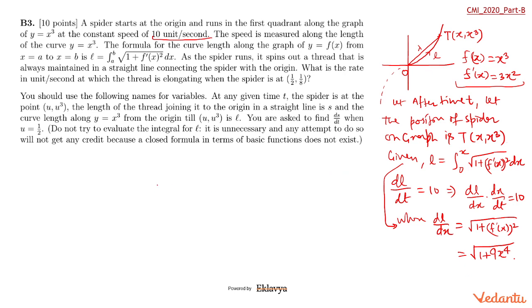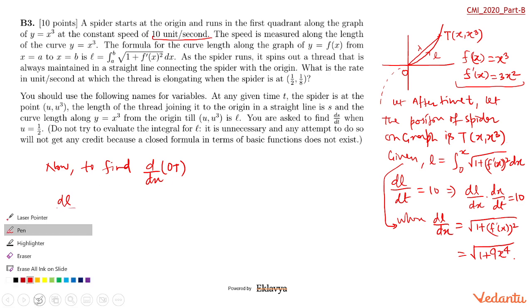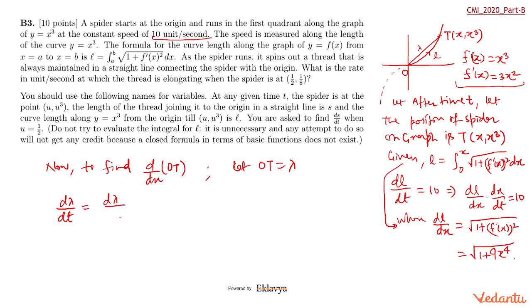The required is lambda basically. Now to find d lambda by dt - let OT equal lambda. So d lambda by dt, before I write d lambda by dx - what is lambda? Lambda is basically under root of x squared plus x raised to the power 6. So d lambda by dx times dx by dt equals d lambda by dx, which when differentiated gives 2x plus 6x raised power 5 divided by 2 under root x squared plus x raised power 6.